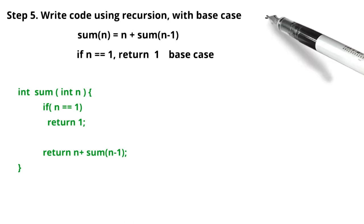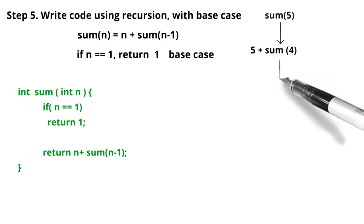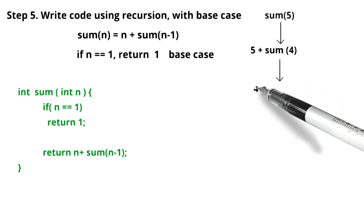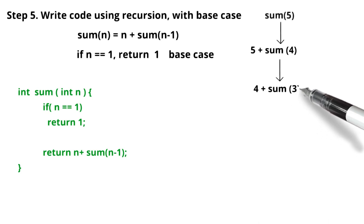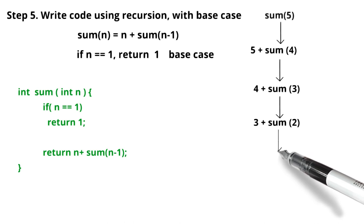From the code, we can see that we will have a function which is named as sum. Its return type is an integer, and we will take one variable, that is integer n. The first condition is if n equals 1, then return 1. And we can call the same function n plus summation of n minus 1, which is calling the recursion. The same function is calling itself.